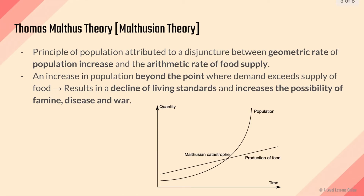Thomas Malthus is known for the Malthusian Theory, commonly known by economists and people who study political population growth theories. The Malthusian Theory is essentially a principal on population attributed to the disjuncture between the geometric rate of population increase and the arithmetic rate of food supply. The theory states that an increase in population beyond the point where demand exceeds supply of food will result in a decline of living standards, as well as an increase in the possibility of famine, disease, and war.